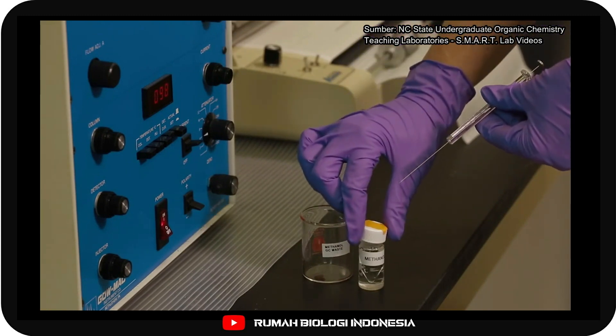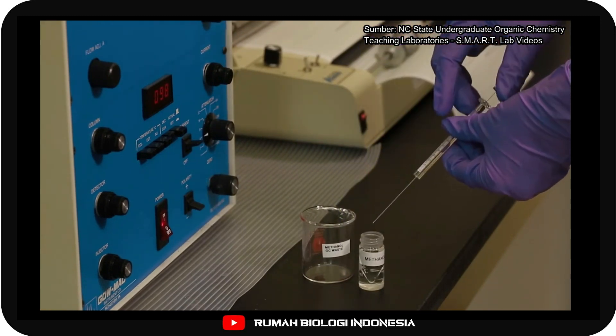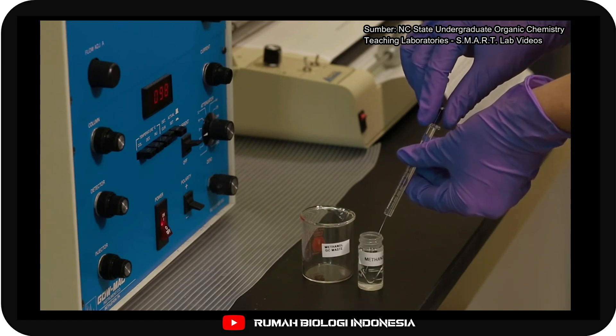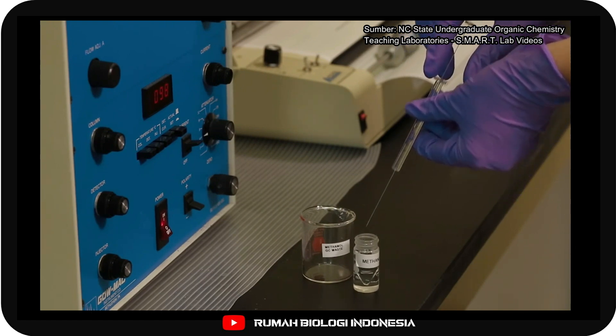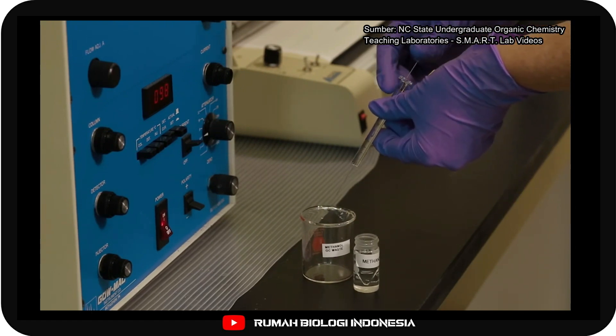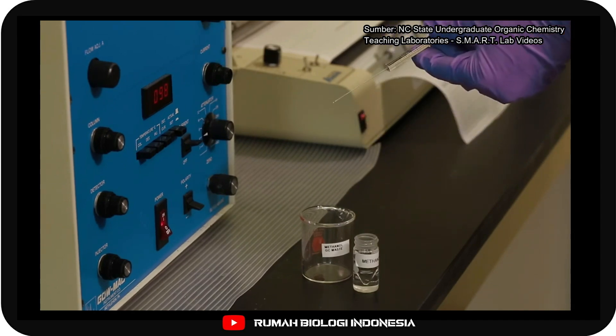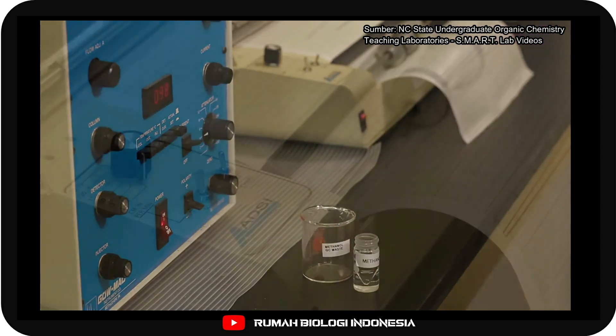While the sample runs through the column, clean the syringe that you used to inject your sample. Pull a solvent, such as methanol, into the syringe. Then empty it into a waste container to clean it of any remaining sample.